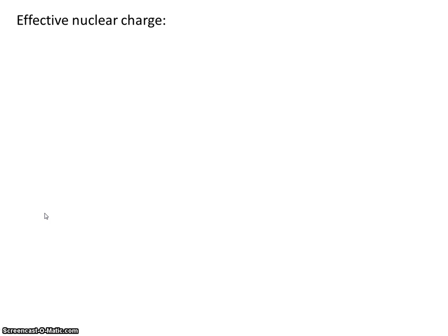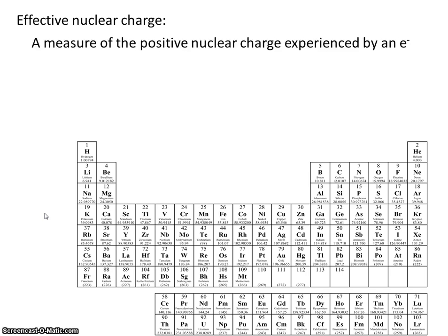Effective nuclear charge is a measure of the positive nuclear charge experienced by an electron. In other words, if there's an electron, how much does that positive charge from the nucleus pull on the electron? So it's a measure of how much positive charge this electron experiences. You know that in the nucleus are protons. There's a positive charge here. So how much is that electron pulled towards the positive charge? That's what effective nuclear charge is.